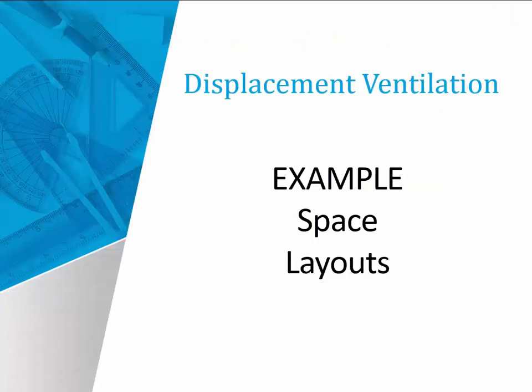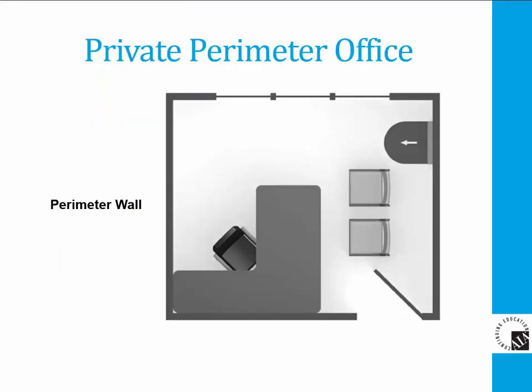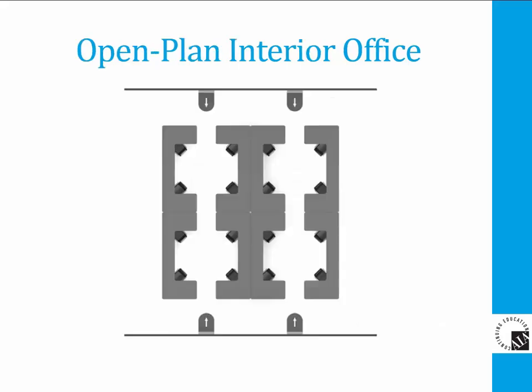Let's look at some space layouts to show plan views of how to overcome some obstacles. Displacement ventilation is ideal for large spaces, though a private office can also be an ideal solution. It is not ideal for partitioned office spaces. This example shows how to condition a partitioned space — the units are located outside the cubicle in the transient area, discharging air forward into the occupied cubicles.